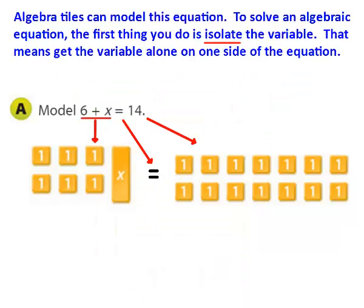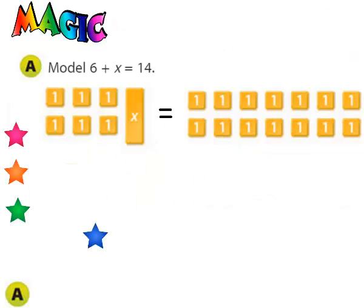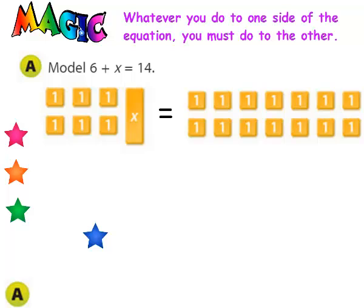Algebra tiles can model this equation. To solve an algebraic equation, the first thing you do is isolate the variable, and that means get the variable alone on one side of the equation. Remember some magic words that will help you: whatever you do to one side of an equation, you must do to the other.